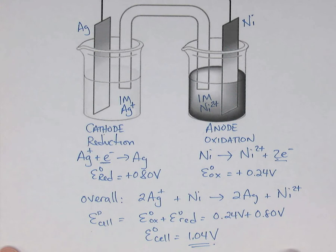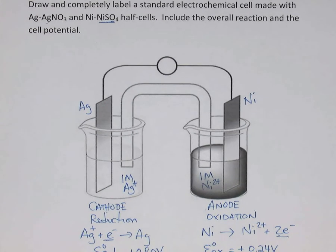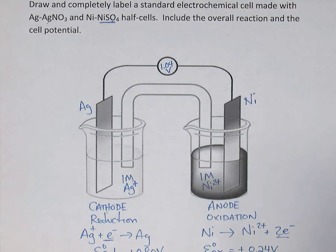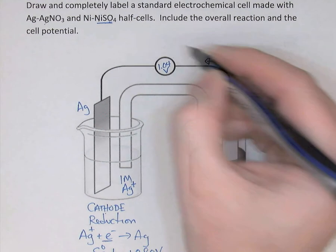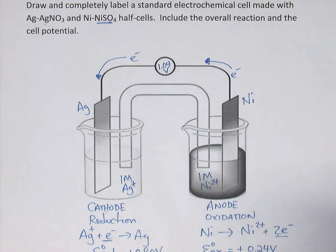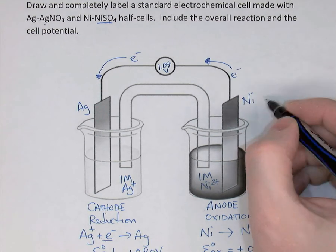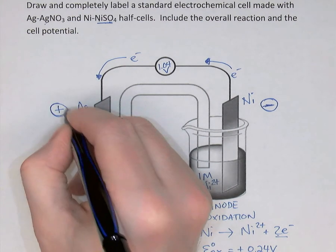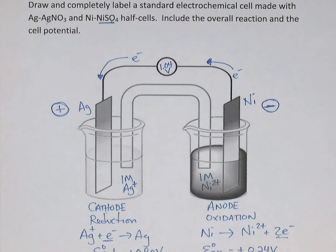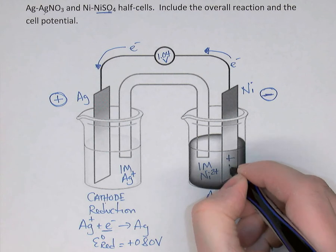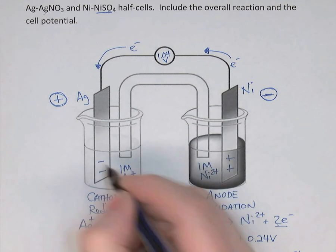Coming back to our diagram, the voltmeter will display 1.04 volts. Electrons leave the anode because that's where oxidation happens — they're being lost there — and they travel to the cathode. The terminal where electrons are leaving is labeled negative because negatives are coming out of it, and the terminal that attracts the electrons is labeled positive on the outside. The internal charges are opposite, though: losing electrons makes you positively charged; gaining electrons makes you negatively charged.